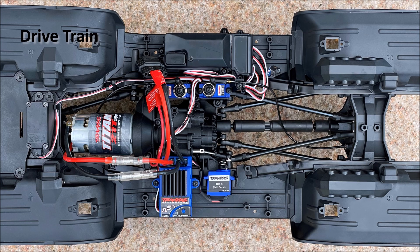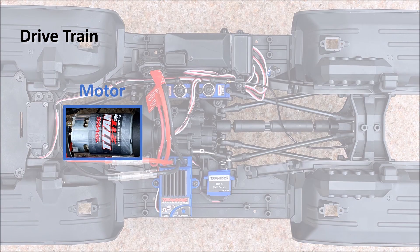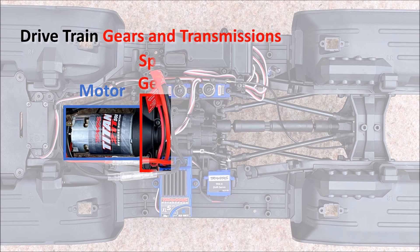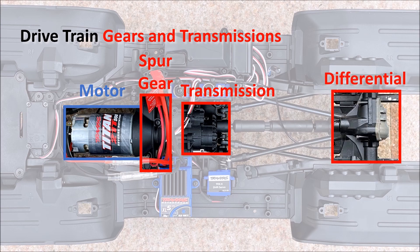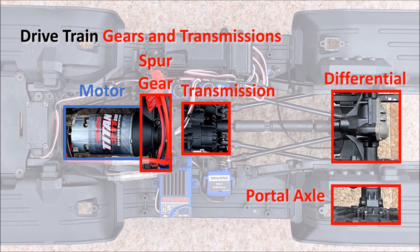The drivetrain starts with the motor followed by the spur gear, the main transfer transmission, several ball bearings before it ends up at frontal and rear differentials and axles.